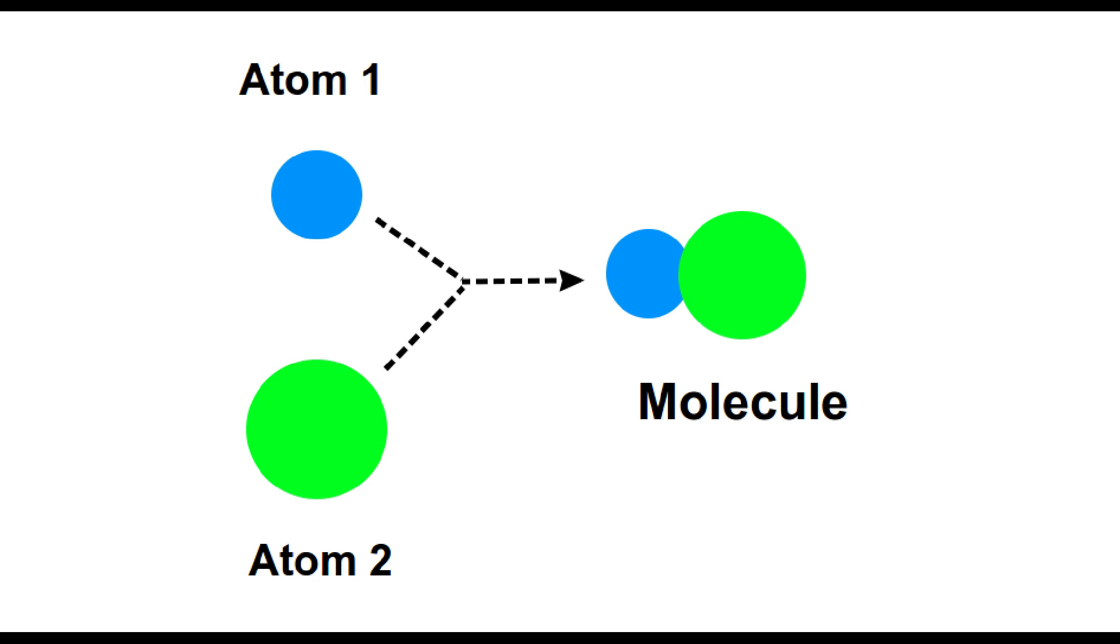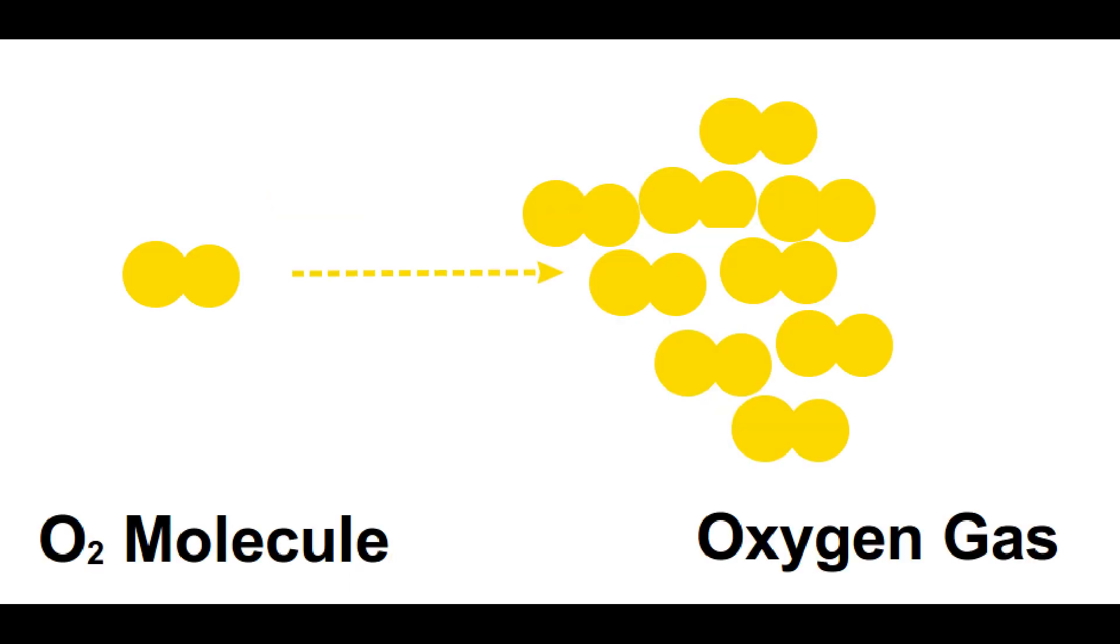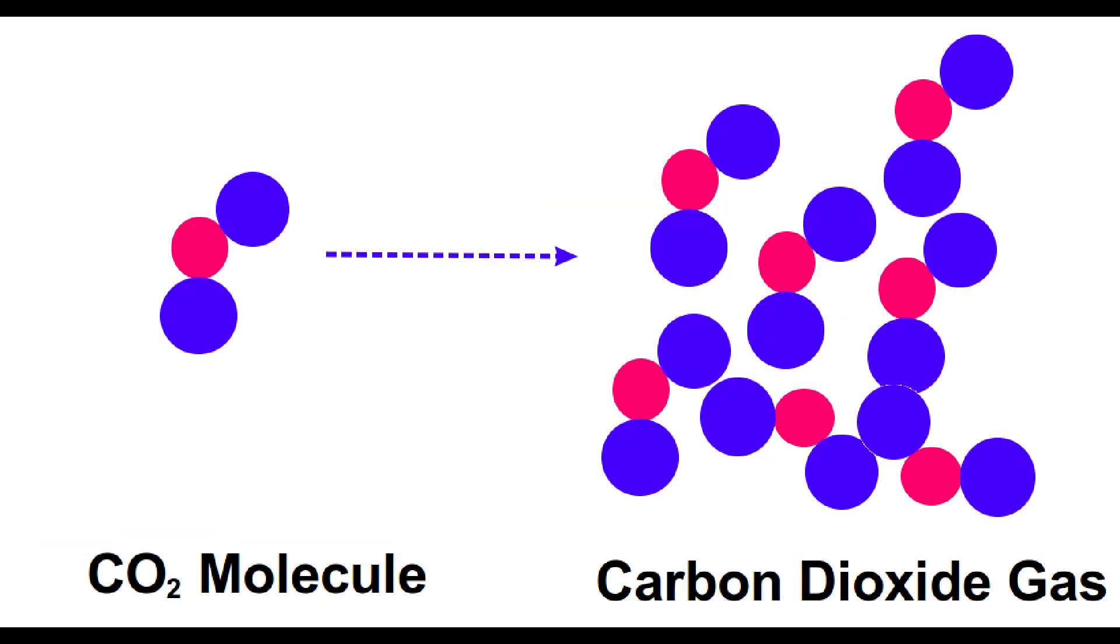Molecules are formed when two or more atoms combine together. Molecules can have similar atoms or different type of atoms. Oxygen gas that we breathe is a molecule with two oxygen atoms. Similarly carbon dioxide gas is also a molecule. It has one carbon and two oxygen atoms.